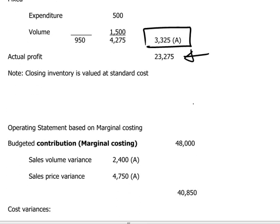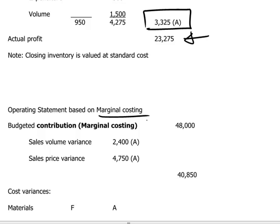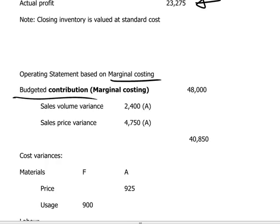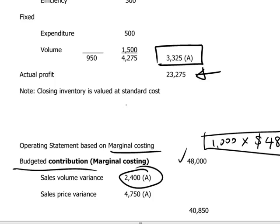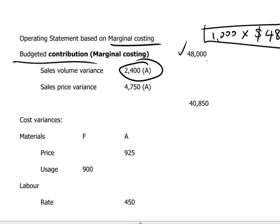We can also build an operating statement based on marginal costing. In this case, our starting point will be the budgeted contribution, which is 1,000 units budgeted sales times $48 — our expected standard contribution per unit. One needs to go back to the underlying scenario to verify these numbers. Starting with $48,000 as budgeted contribution, we deduct the sales volume and sales price variances. Note that the sales volume variance under marginal costing differs from that used in the absorption costing method, producing an adjusted budgeted contribution of $40,850.